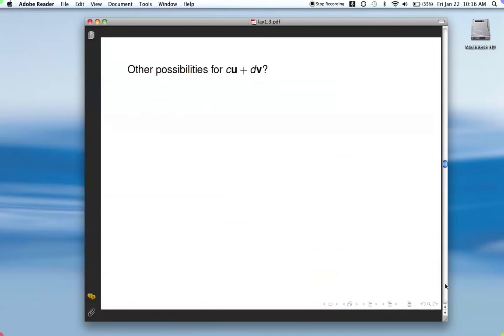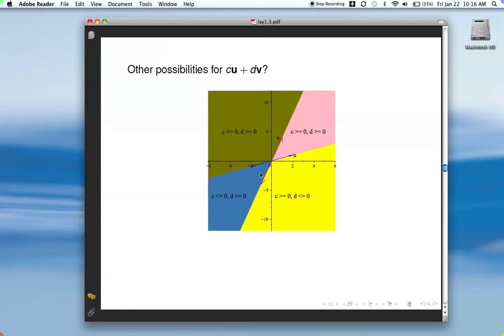So other possibilities for c and d. Let's think about that. If we allow positive multiples of u and negative multiples of v, then we're in this yellow region here.